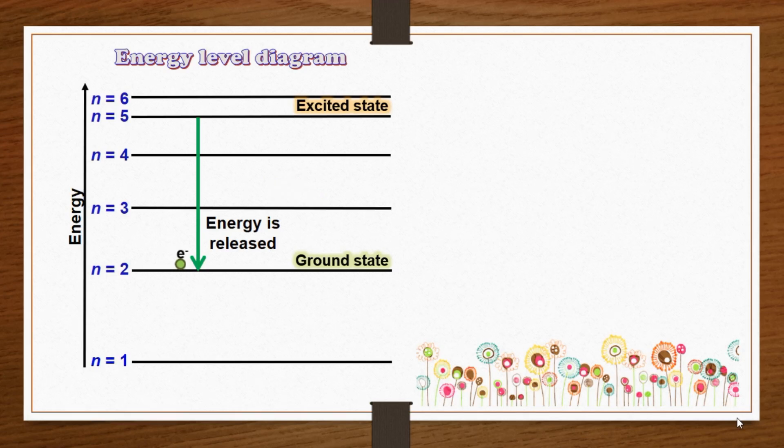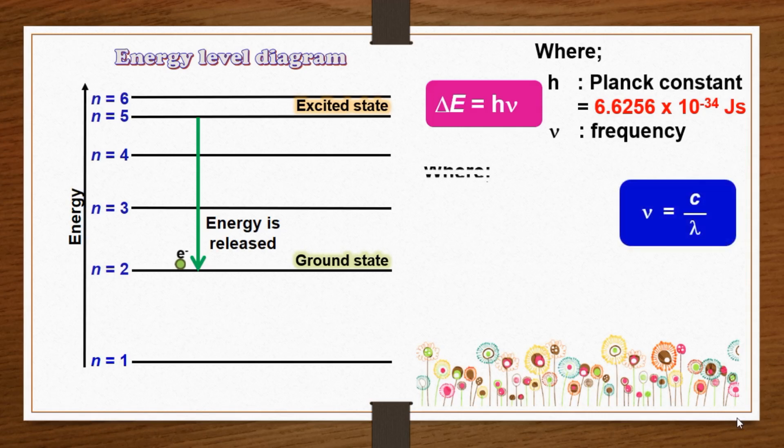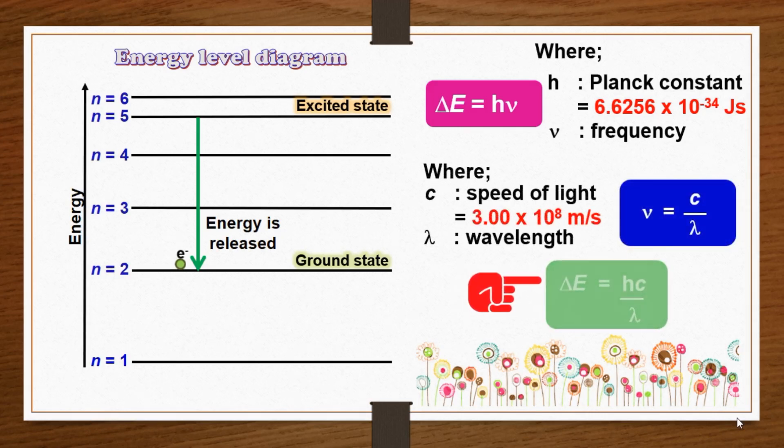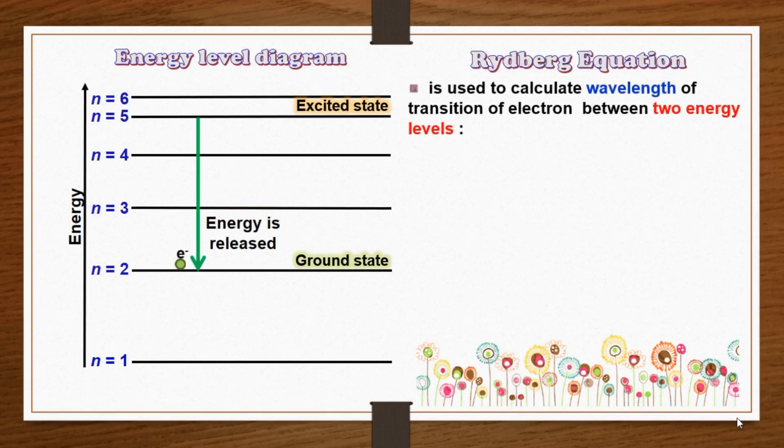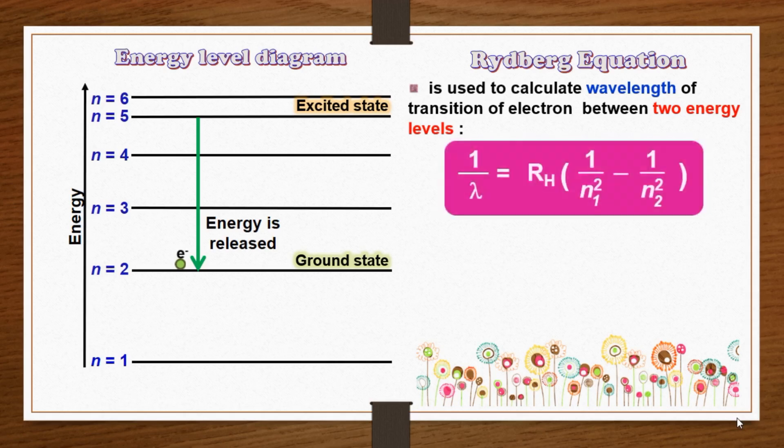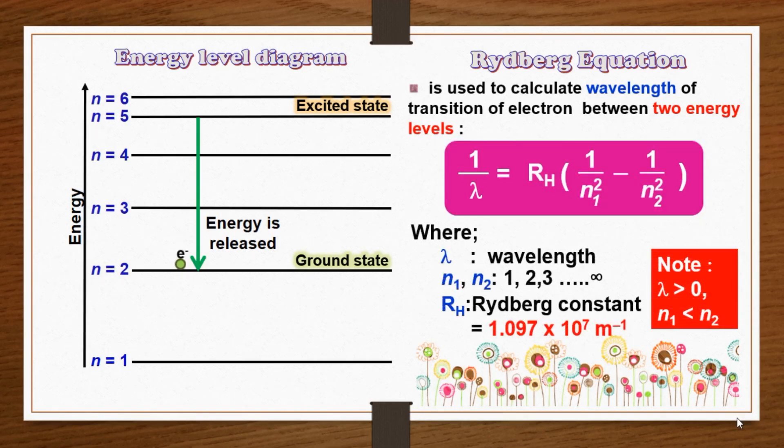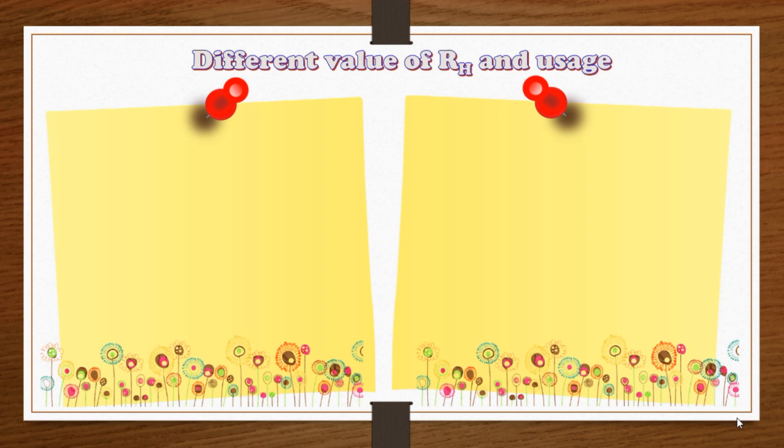The photon is emitted in the form of radiation with appropriate frequency and wavelength. Hence, its frequency and wavelength can be calculated by using the Rydberg equation, which can be used to calculate the wavelength of transition of electron between two energy levels. Please note that the value of the Rydberg constant is different for both equations.